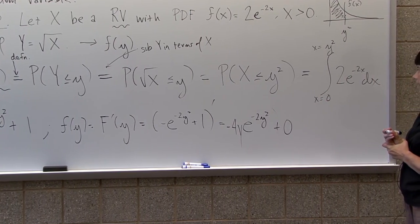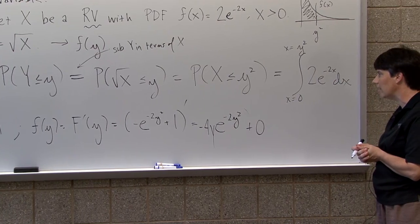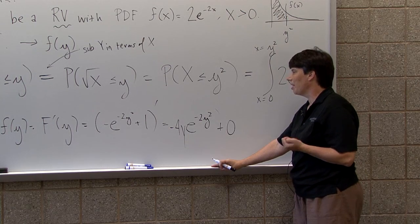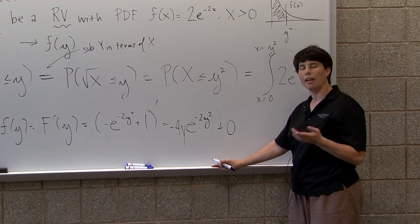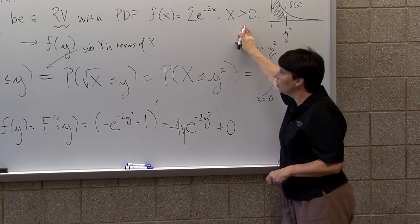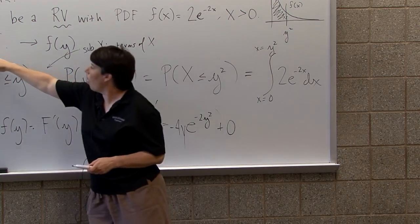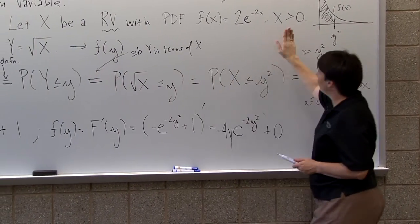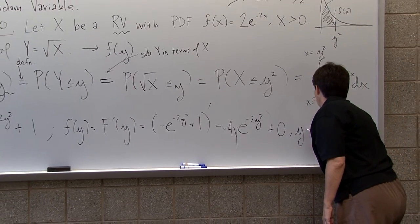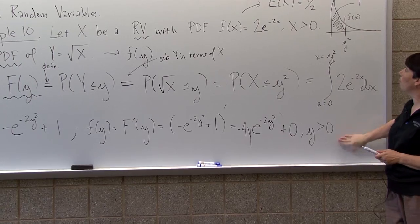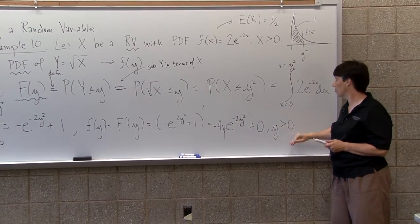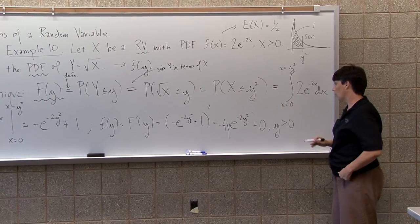And we're almost done. The only way now I can know if this is valid is that it integrates to 1 over its support. But we kind of have not talked about the support for the minute and I hope it seems natural to you. X is bigger than 0, and the random variable y is equal to the square root of x. So if x is bigger than 0, y is bigger than 0. So actually my support here is y bigger than 0. I'm getting my support by looking at x's support, looking at the relationship, and then figuring out what y has to be.